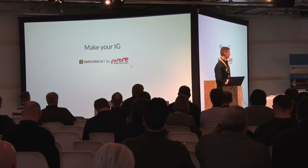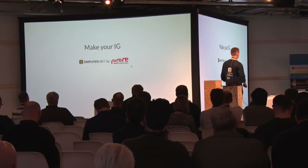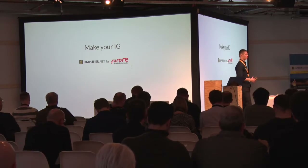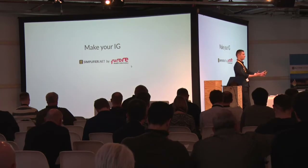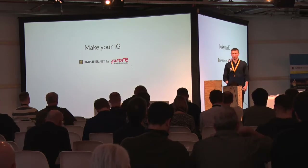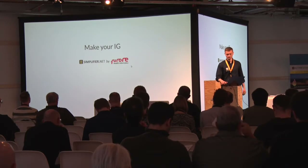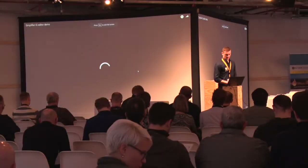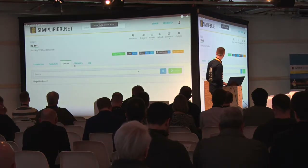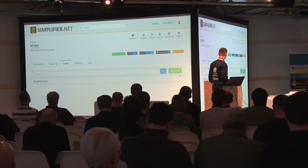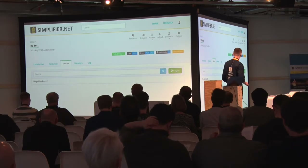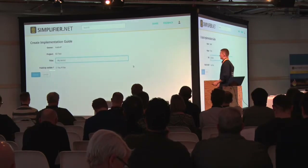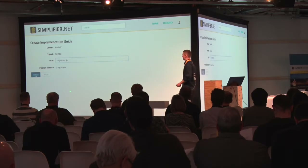So we've created our profiles, we've created our value sets, we've created our examples. We want to tie it all together into a publication - we want to give it to our vendors saying 'here's our stuff, let's implement it.' We can use Simplifier for that. When we go to our project, there's a Guides tab. In the Guides tab there's a Create button. We hit Create, give our implementation guide a name, and hit Create.